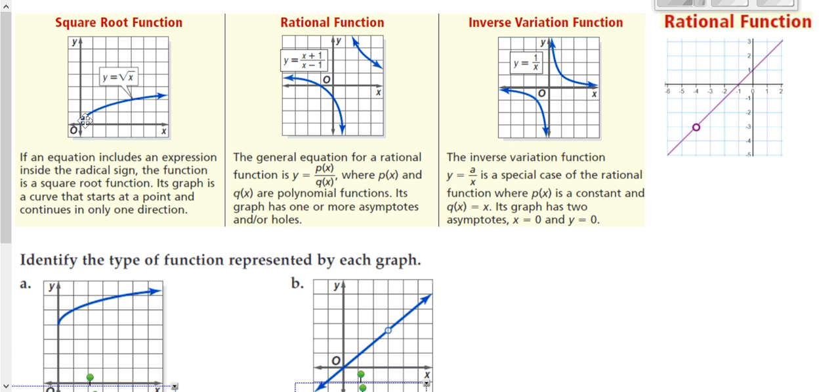We also have a square root function, has a square root in it. It's half of a parabola that's going sideways. We also have rational functions, which we've looked at in this chapter. Rational functions might have a hole like this one on the right, or they might have vertical asymptotes. If it's a special rational function with vertical asymptotes on the x and y axes, then it's an inverse variation.